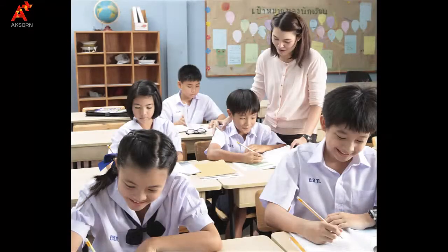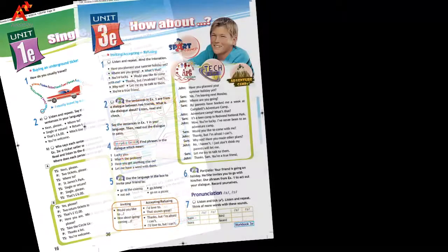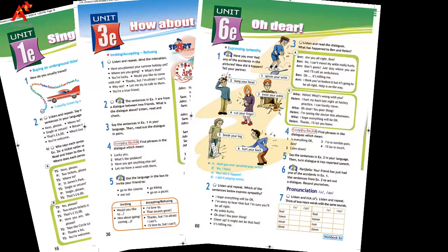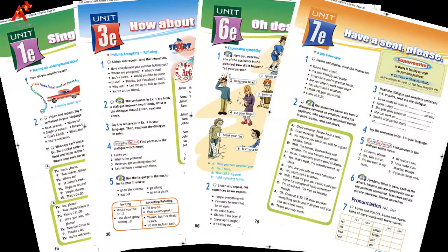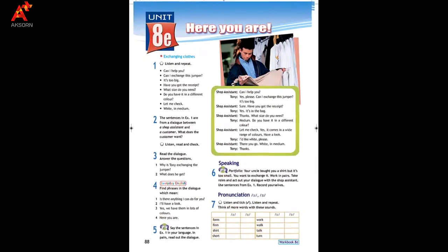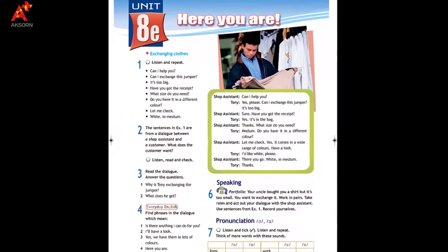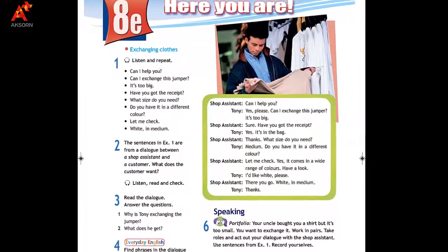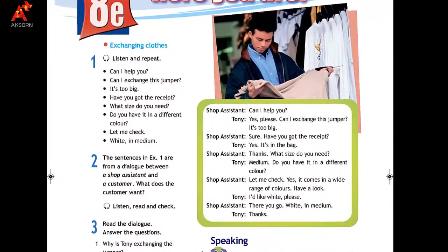จึงเป็นคำตอบสำหรับคุณครูในการจัดการเรียนการสอนค่ะ ถ้าถามคุณครูว่าการสอนภาษาอังกฤษทักษะใดที่ยากที่สุดสำหรับนักเรียนไทย คำตอบส่วนใหญ่คงไม่พ้นทักษะการพูดและการเขียน ปัญหาเหล่านี้จะหมดไปถ้าคุณครูเลือกใช้สื่อชุด Access เพราะใช้แนวคิดในการสอนภาษาเพื่อการสื่อสารหรือ CLT สื่อชุดนี้จึงมีกิจกรรมที่หลากหลายเพื่อฝึกพูดในสถานการณ์ต่างๆ ที่เกิดขึ้นในชีวิตจริง โดยเริ่มต้นจากการสอนคำศัพท์หรือสำนวนภาษา จากนั้นฟังและอ่านบทสนทนาต้นแบบ เสร็จแล้วให้นักเรียนฝึกพูดด้วยตนเอง